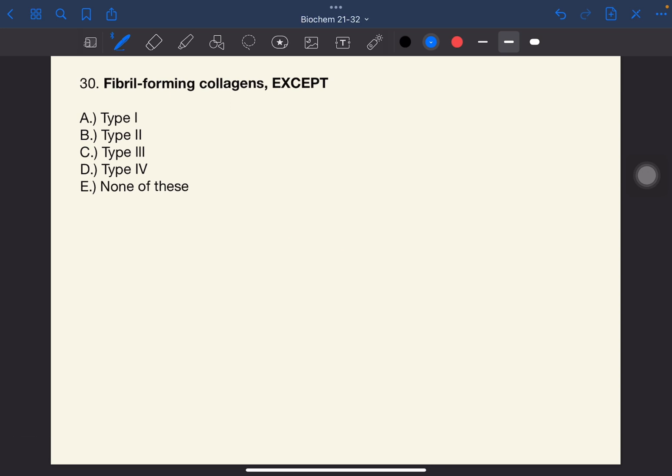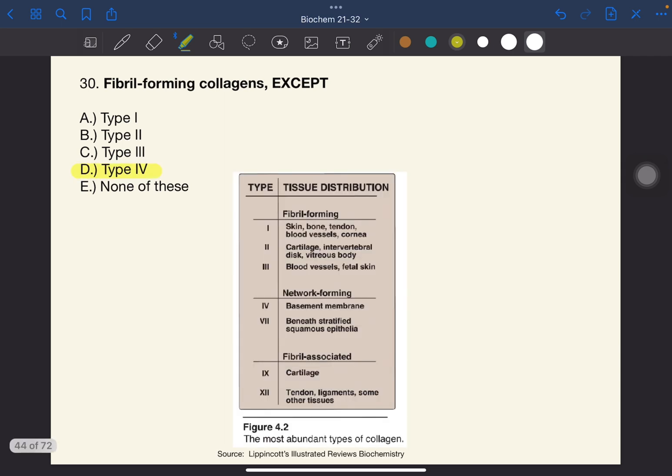Number 30. Fibril forming collagens except... The answer to this one is D, type 4. Collagen is organized into three groups based on their location and function in the body. And under each group, there are types. For group 1, the fibril forming collagen, they have the rope-like structure described earlier for a typical collagen molecule.